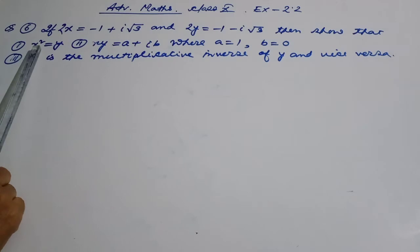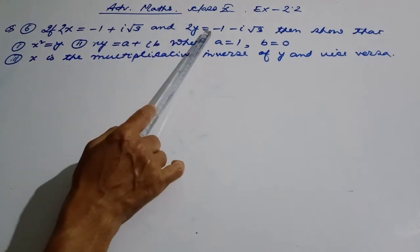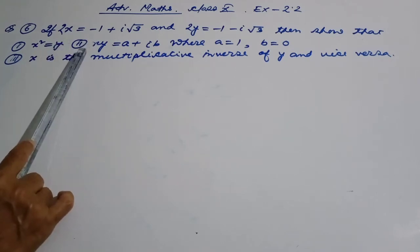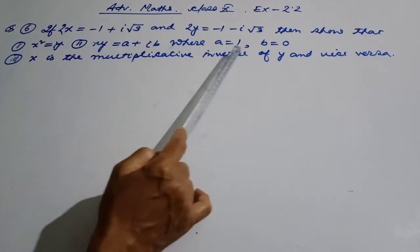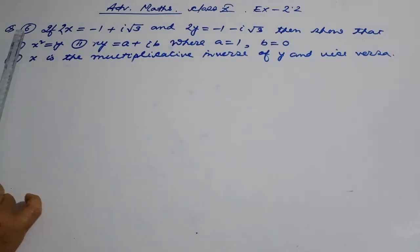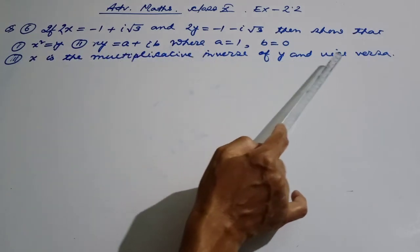So then x square is equal to y. A is equal to 1, b is equal to 0.